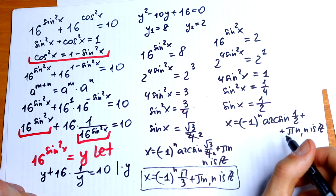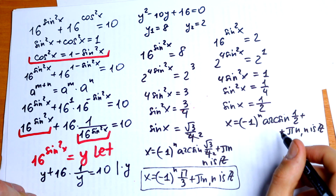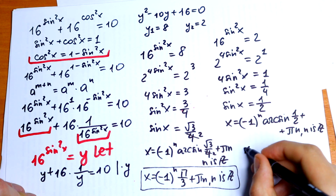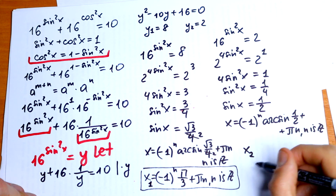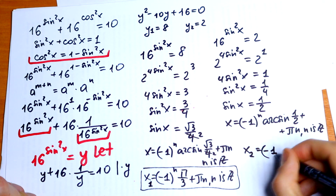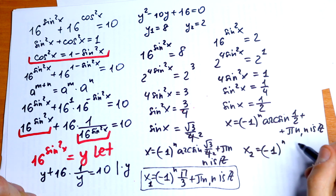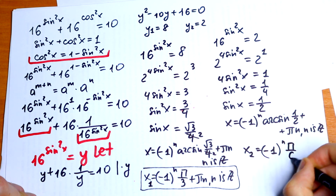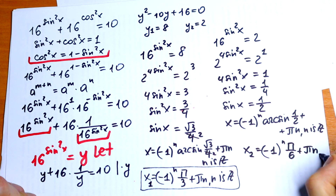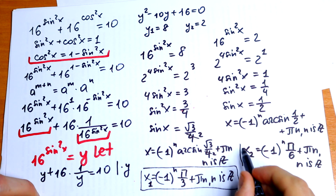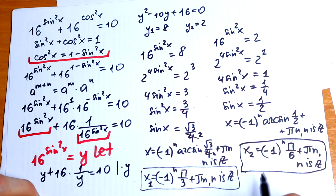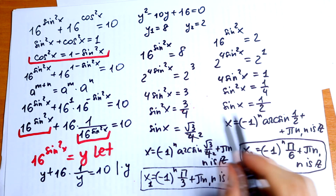Since arcsin(1/2) equals π/6, we get x = (−1)^n · π/6 + πn, where n is an integer. These are really good, classic trigonometric roots. This is our second solution x₂. Together, these are the complete solution to this interesting exponential equation in trigonometric form.